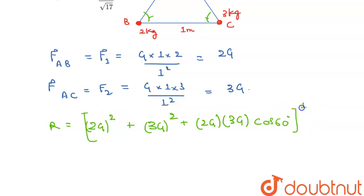Root over F1 square. So, this will be power 1 by 2, okay? Simplifying this, this will be 4g squared plus 9g squared plus